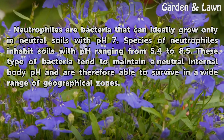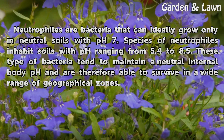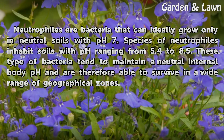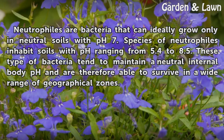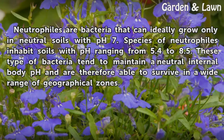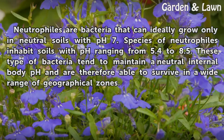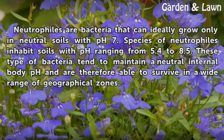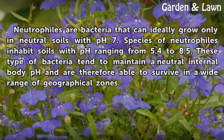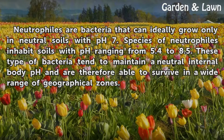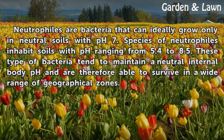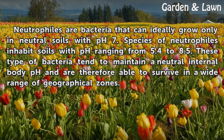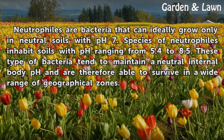Neutrophiles are bacteria that can ideally grow only in neutral soils with pH 7. Species of neutrophiles inhabit soils with pH ranging from 5.4 to 8.5. These type of bacteria tend to maintain a neutral internal body pH and are therefore able to survive in a wide range of geographical zones.